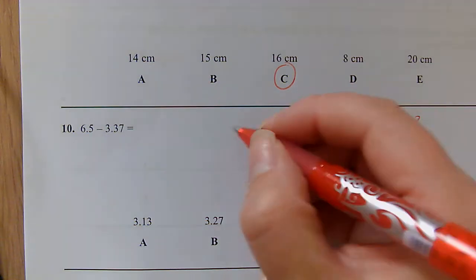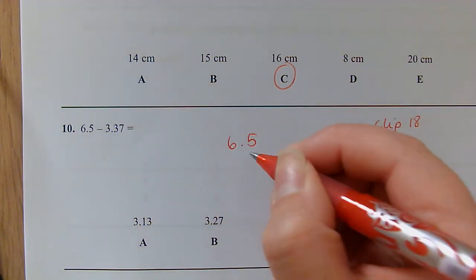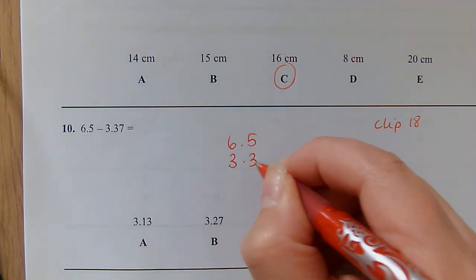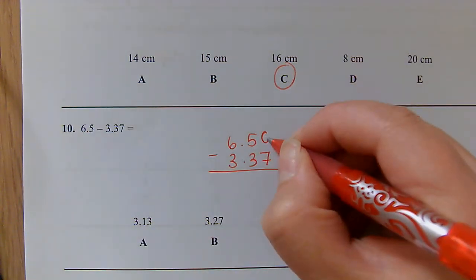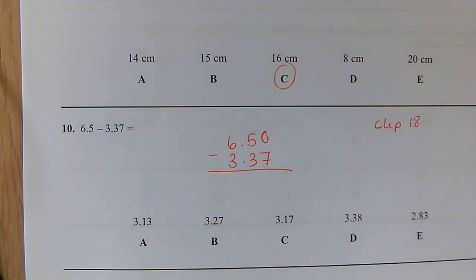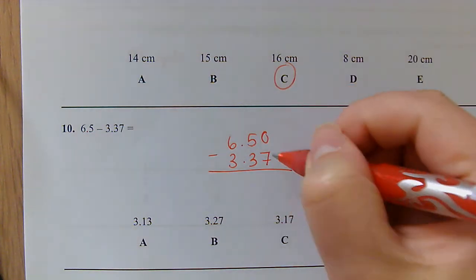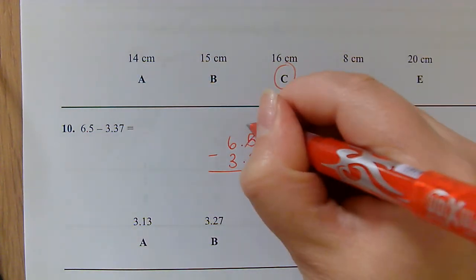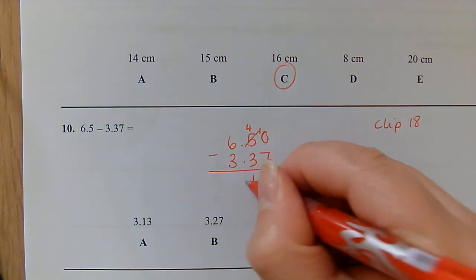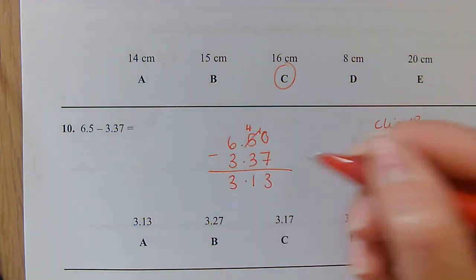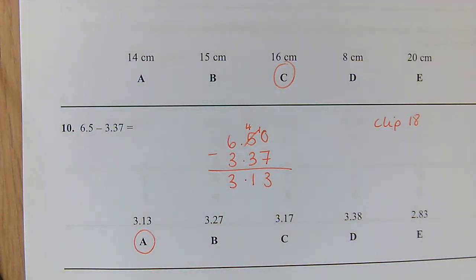Question 10: We're subtracting some decimals here. Don't forget to do a bit of working out. So we're going to line up our decimals correctly within their place value, popping in zero there as a placeholder. So zero take away seven, can't do it, so we're going to borrow. Ten take away seven is three, four take away three is one, six take away three is three, so we have 3.13.